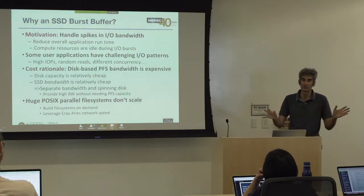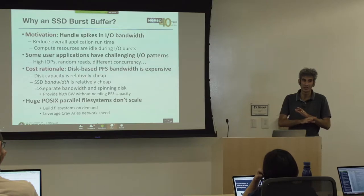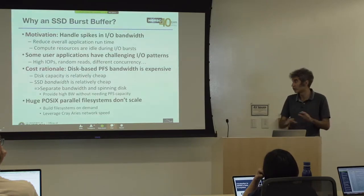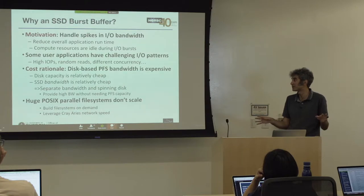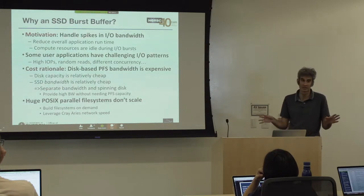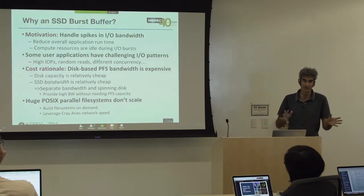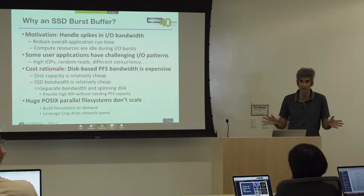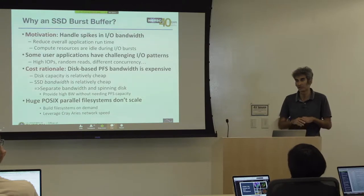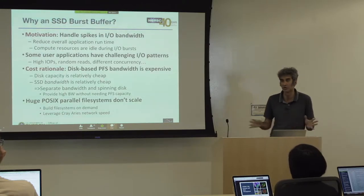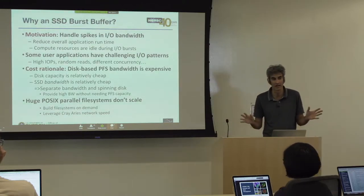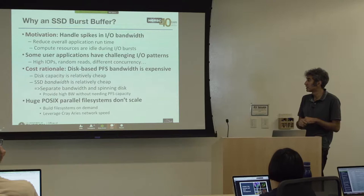As has probably been mentioned, we have the Lustre file system on Cori — a huge 30 petabyte POSIX parallel file system where every user can see every other user's files and so forth. That's not a very scalable model for performant file systems.